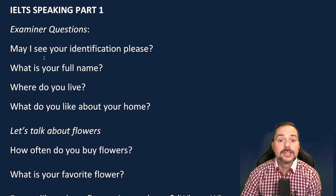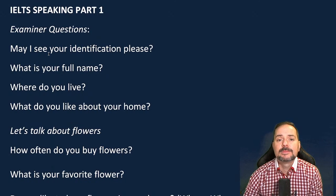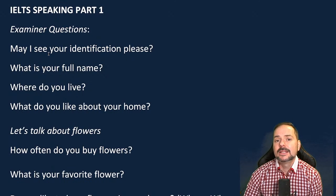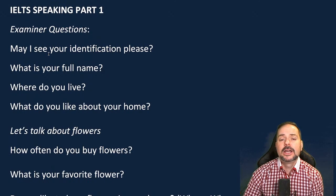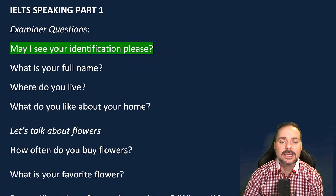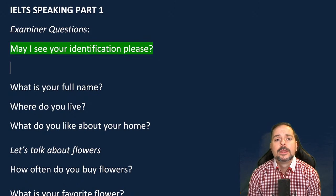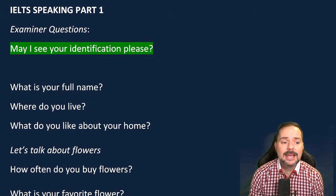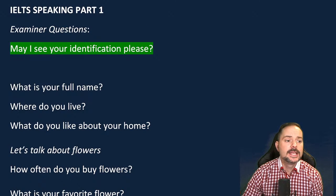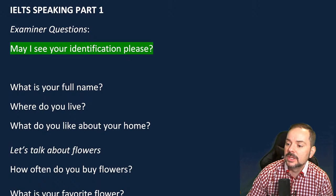The examiner always starts the same way. They will say: 'Welcome to the speaking portion of the IELTS exam. My name is Adrian. I will be your examiner for this part of the test. I will give you instructions for each of the three parts. This is candidate number 9571. We are currently conducting this exam in Madrid. The time is 13 o'clock. Now we shall begin. May I see your identification please?' They will ask for the same ID you showed during registration. You need to give a nice full sentence answer.